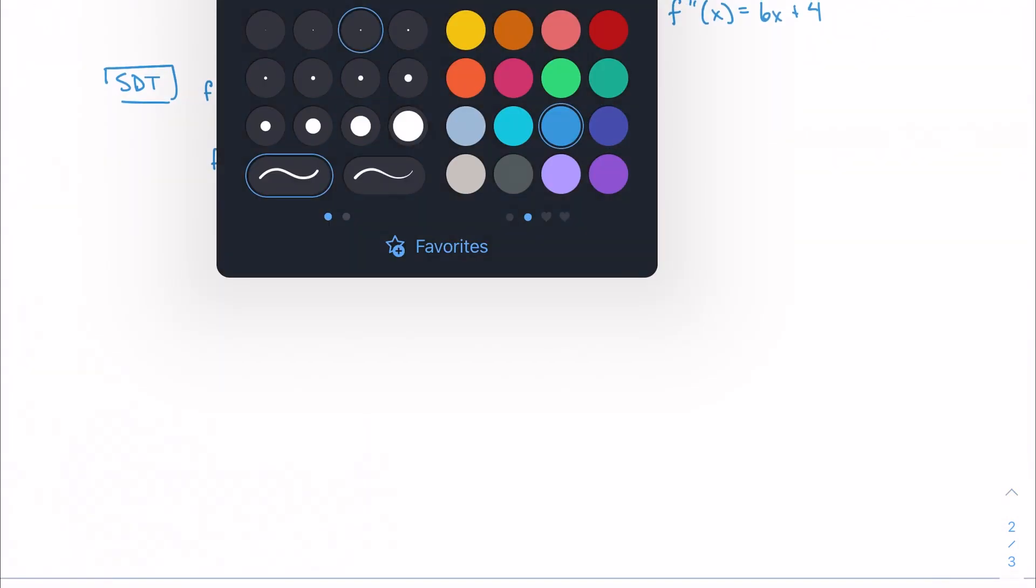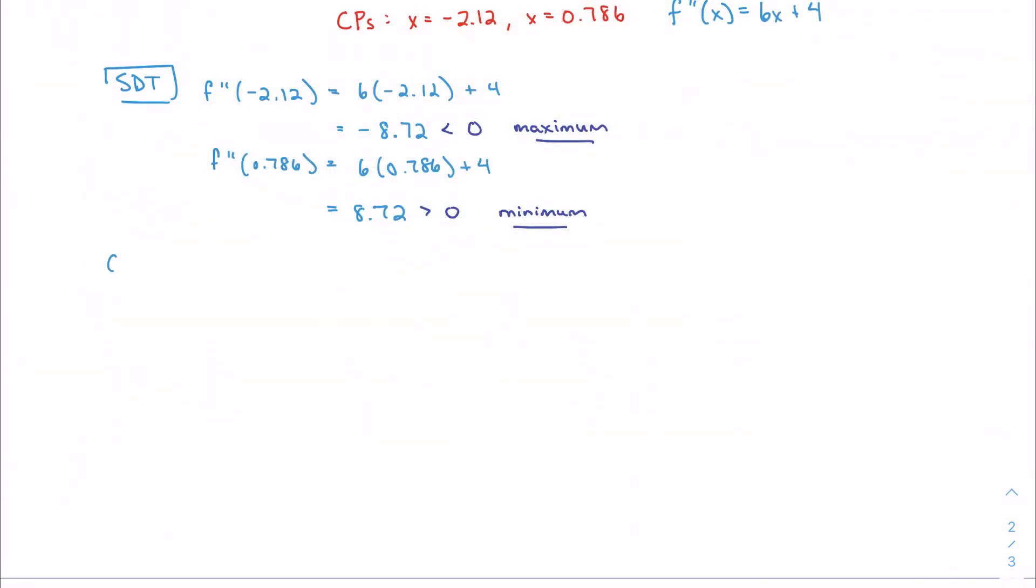Well, that's great, but we want to know more. We want to know about the concavity. So in order to do that, we need to find the points, find our inflection points. Where is the second derivative equal to 0? So where is 6x plus 4 equal to 0? That happens when x is negative 2 thirds.